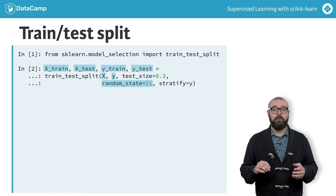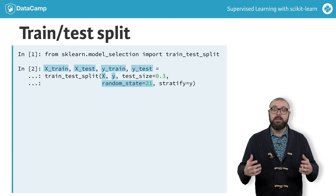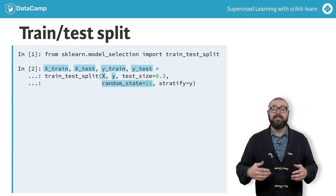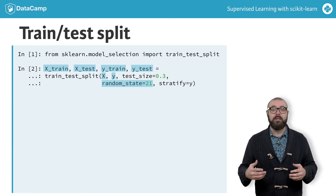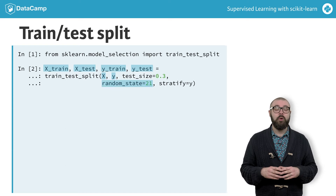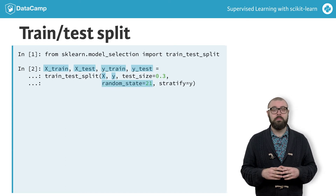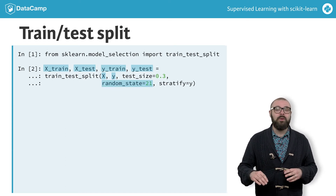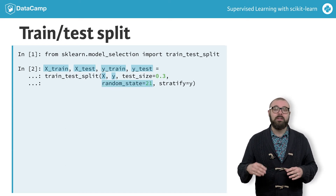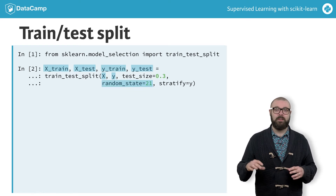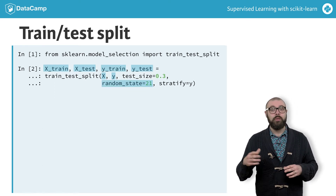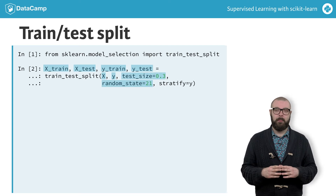By default, train_test_split splits the data into 75% training data and 25% test data, which is a good rule of thumb. We specify the size of the test set using the keyword argument test_size, which we set here to 30%.